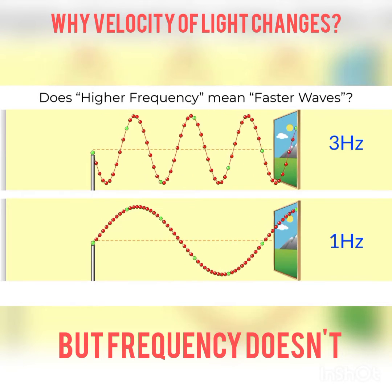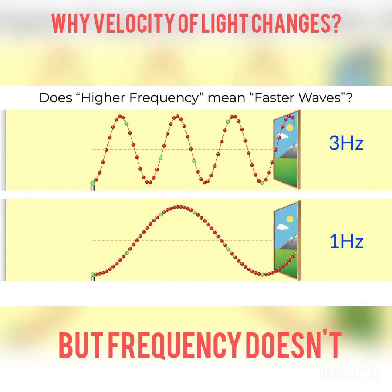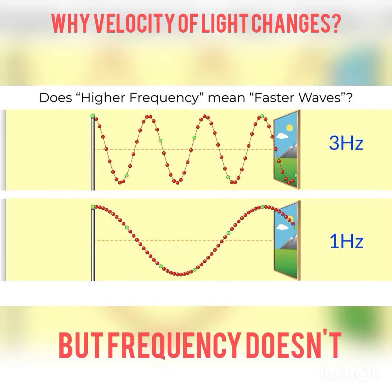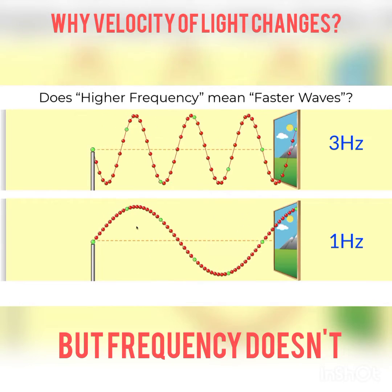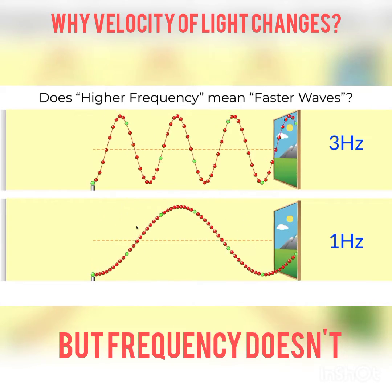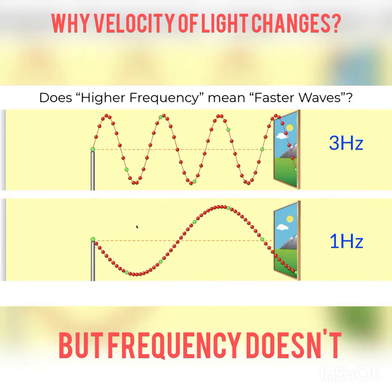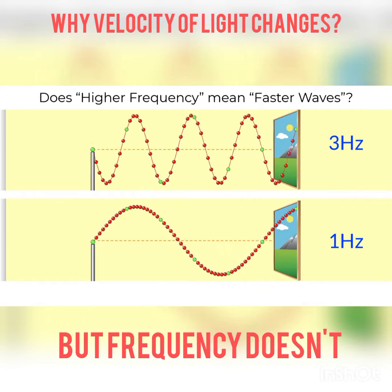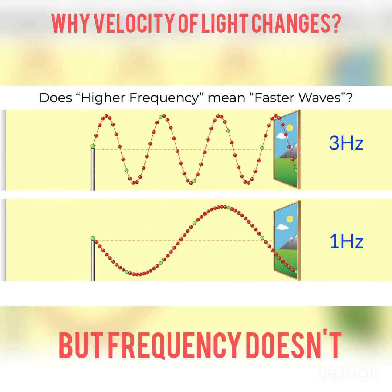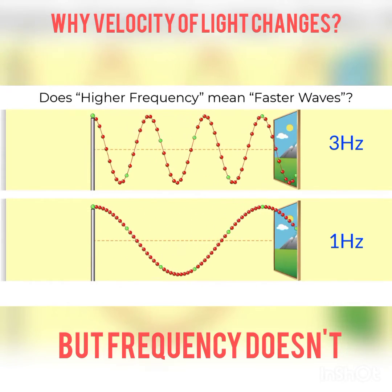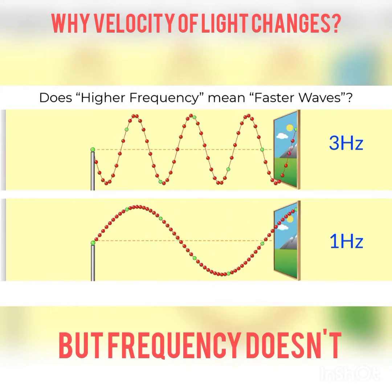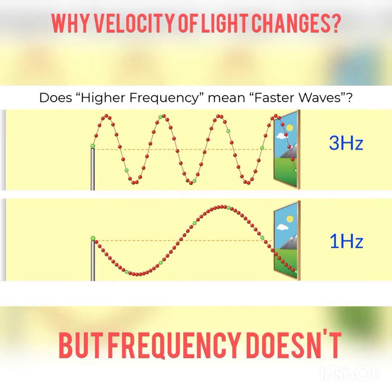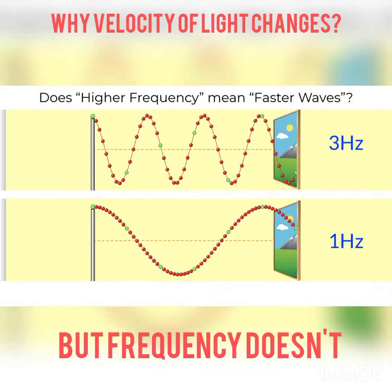At the top we have a three hertz frequency wave; on the bottom we have a one hertz frequency wave. So at the top we're going to get more waves per second crossing through that point than we will on the bottom. But if you take a look at the crests of the top wave and the crest of the bottom wave, you'll notice that they are moving at the exact same speed.